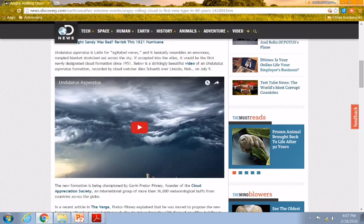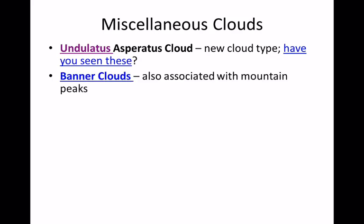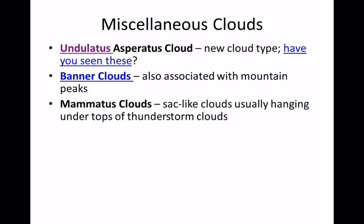Banner clouds form on the downwind side of a mountain, looking like a smokestack coming off. Mammatus clouds are associated with the underside of the anvil portion of a thunderstorm cell — you can see the cumulonimbus build and flatten out when it bumps against the tropopause, and underneath that anvil you see these pouchy-looking formations.